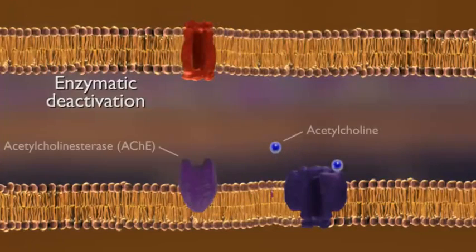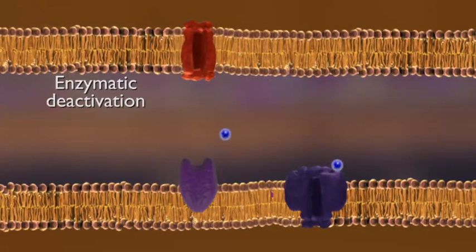The other method, called enzymatic deactivation, involves enzymes breaking down the neurotransmitter into inactive components. The components are then taken back up and recycled.